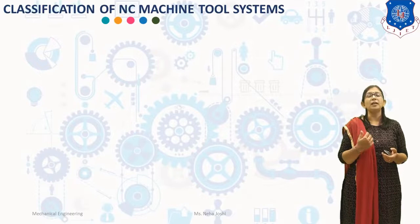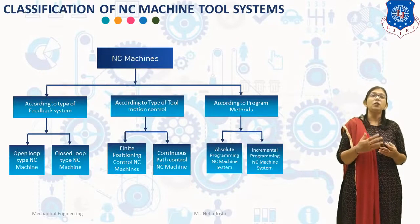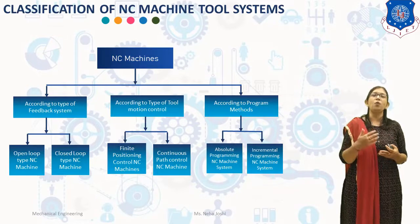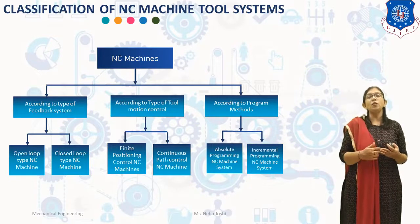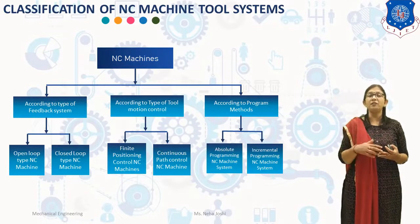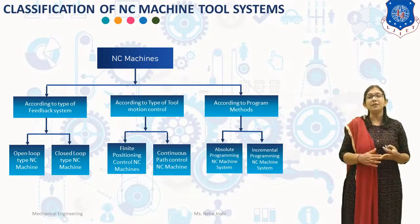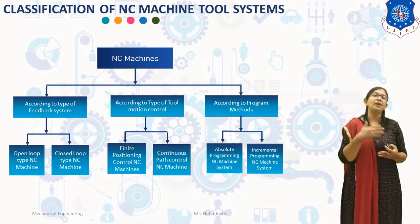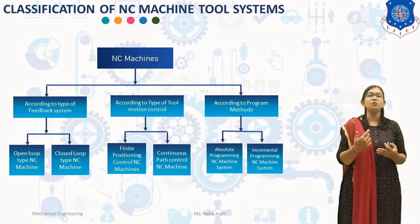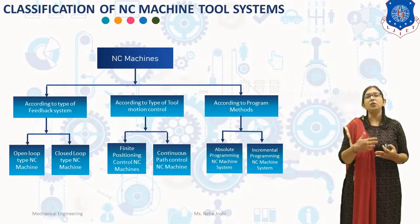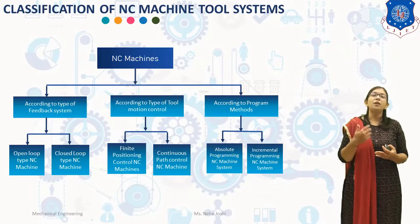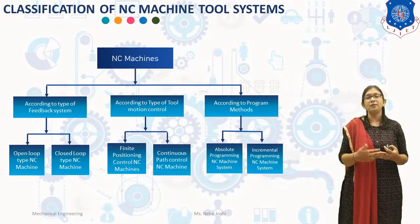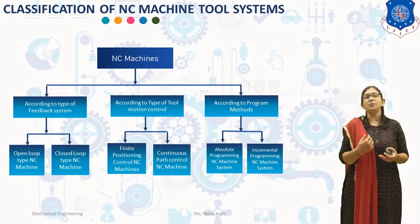Now we will discuss the classification of NC machine tools. NC machine tools can be classified according to: the type of feedback system, the type of tool motion control, and the programming method. According to the feedback system, there are open loop type NC machines and closed loop type NC machines. According to the type of tool motion control, there are finite positioning control NC machines and continuous path control NC machines. According to the programming method, there are absolute programming NC machine systems and incremental programming NC machine systems.